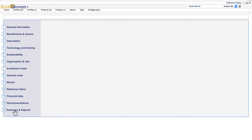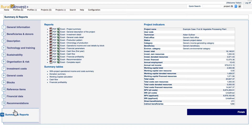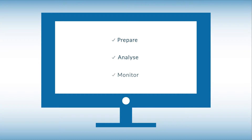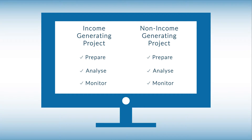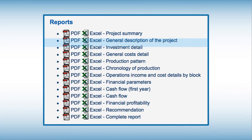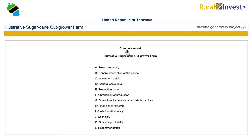This tutorial aims to assist RuralInvest practitioners in understanding key sections and indicators of the reports generated when data entry is completed. In particular, it would help users to identify and correct common errors which can be seen in the generated reports. The RuralInvest software provides a tool to prepare, analyse and monitor the output of income-generating and non-income-generating projects, from simple project profiles to fully designed projects. RuralInvest can then generate reports covering various aspects of each project. The complete report option presents an aggregated report of all the independent or section-specific reports. This tutorial focuses only on the complete report for income-generating projects and does not cover project profiles.